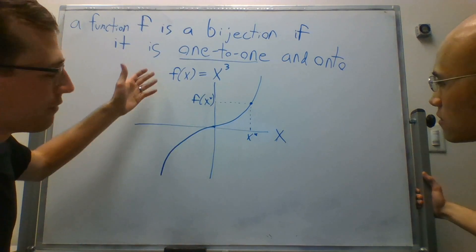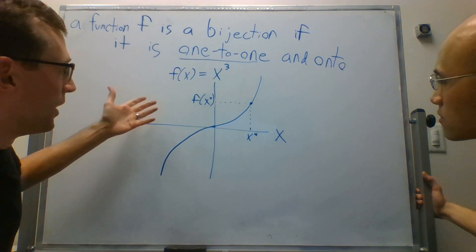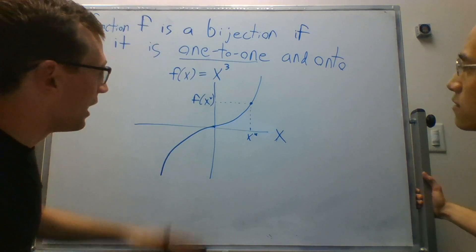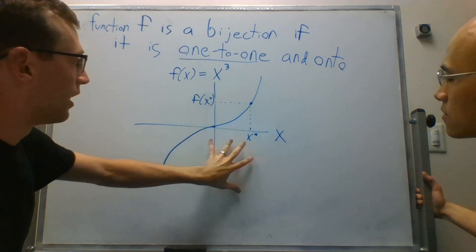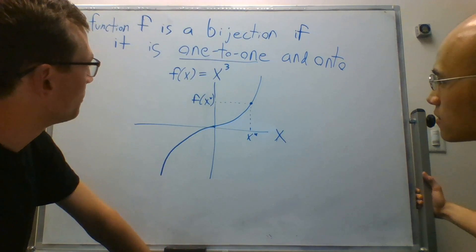Like, let's say you had f of x equals 10,000. Well, you just find the cubed root of 10,000. Right. And you've got your point in the domain of the function that maps to 10,000. Right. With this function.